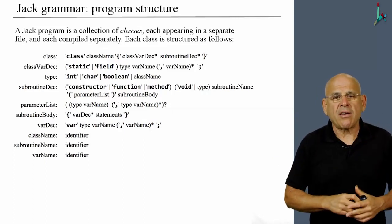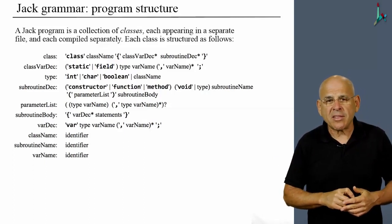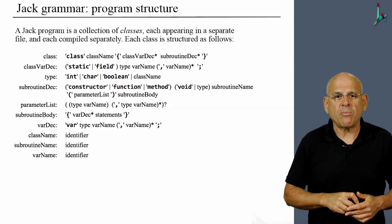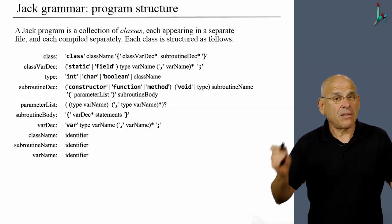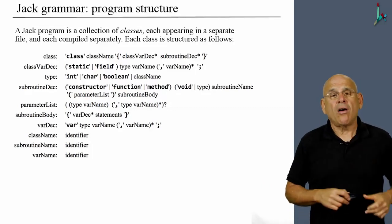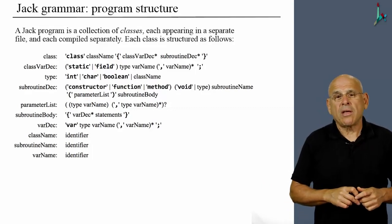So you see a few more rules here and a few more terminals that describe what it takes to be a class name, subroutine name, and variable name, and that's it. That's the definition of the program structure in Jack.